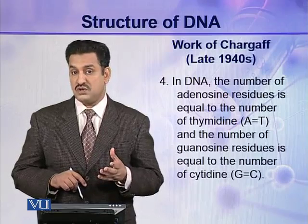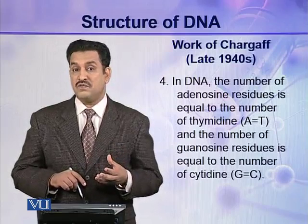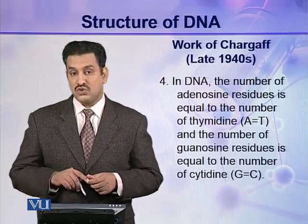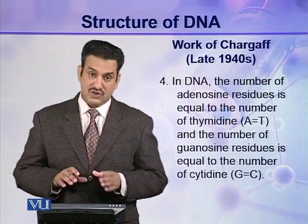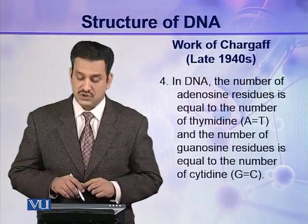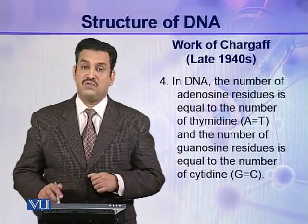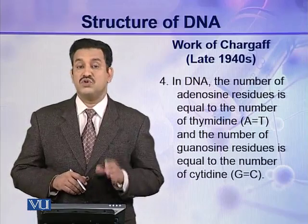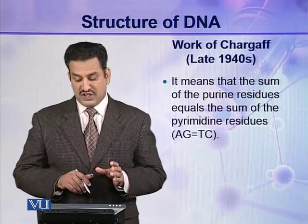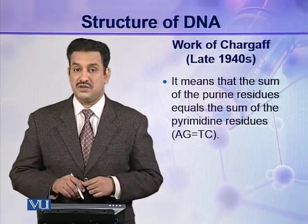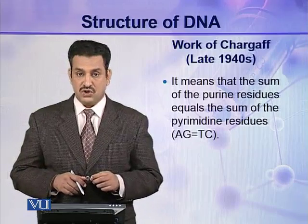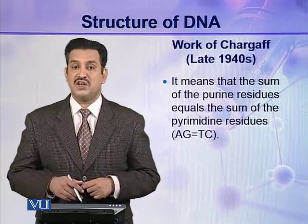The fourth rule is perhaps the most important, as it gave the most important clue to Watson and Crick, who finally described the structure of DNA. This rule states that the number of adenosine residues in DNA is equal to the number of thymidine residues, and similarly, the number of guanosine residues is equal to the number of cytidine residues. That is, A is always equal to T and G is always equal to C, meaning the sum of purines equals the sum of pyrimidines, since A and G are purines and T and C are pyrimidines.